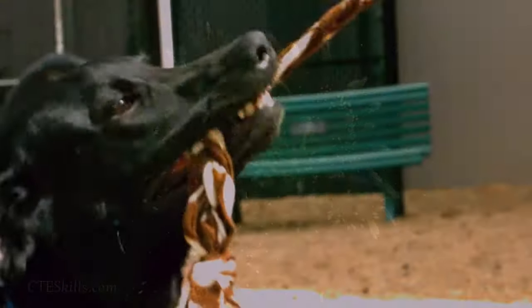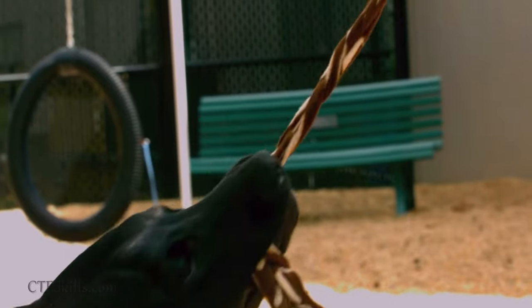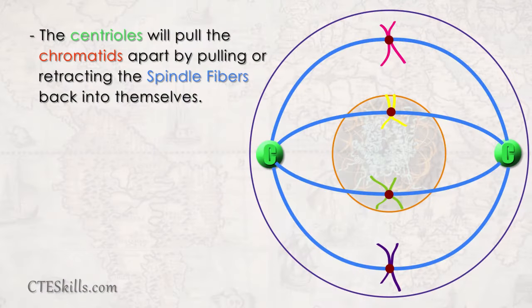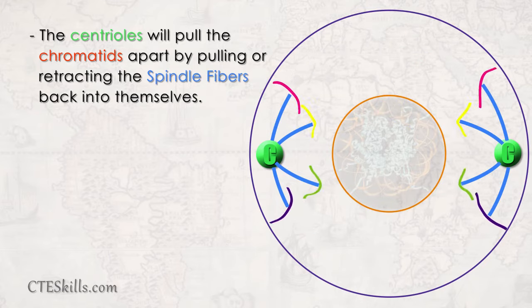Now, the grand finale, the tug of war. Once the spindle fibers have attached to the centromeres, the centrioles will pull the chromatids apart by pulling or retracting the spindle fibers back into themselves.